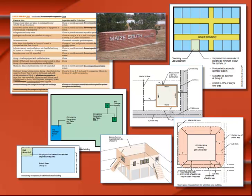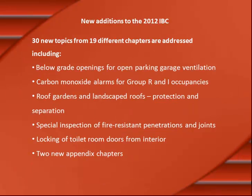This slide shows examples of the illustrations provided with changes that deal with general building height and area provisions. The changes in Chapter 5 of the code include items such as posting the address in multiple locations, mezzanine egress, calculating the area increase based upon open frontage increase, accessory occupancies in unlimited area buildings, open space for unlimited area buildings, and the incidental use provisions mentioned earlier.